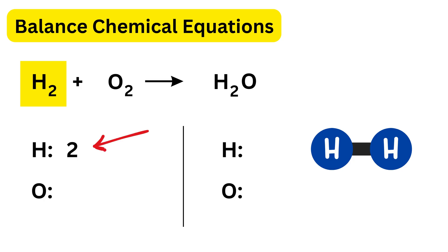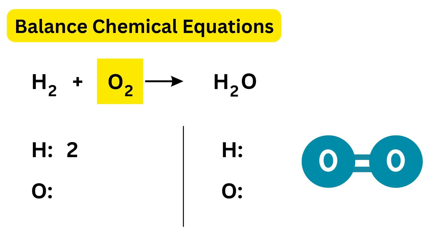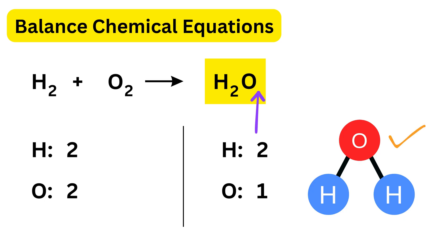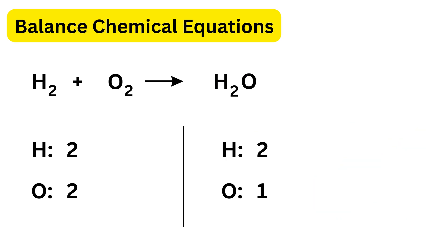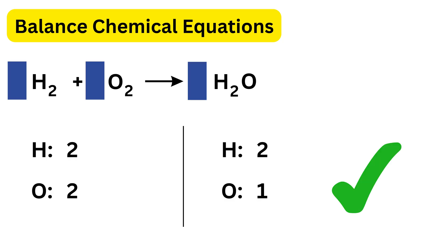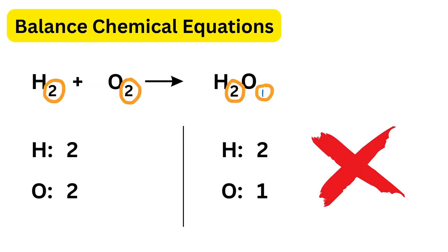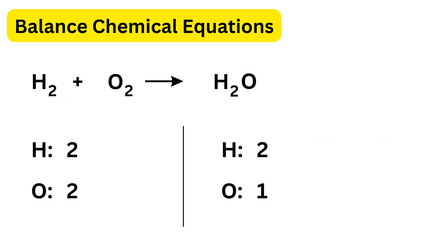One H₂ molecule means two hydrogen atoms. We also have O₂, which means two oxygen atoms. On the right, the subscript 2 after hydrogen means two hydrogens; oxygen has no subscript so it means one oxygen. The right side has two hydrogens and one oxygen. We are only allowed to change the big numbers in front of atoms or molecules, called coefficients — we are not allowed to change the subscripts, which are part of the chemical formula.